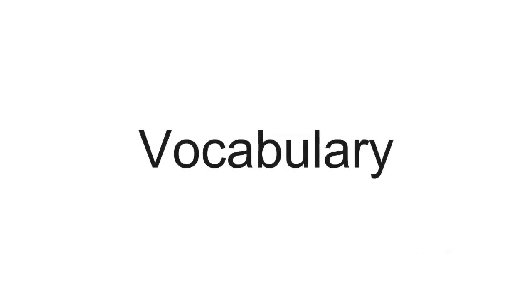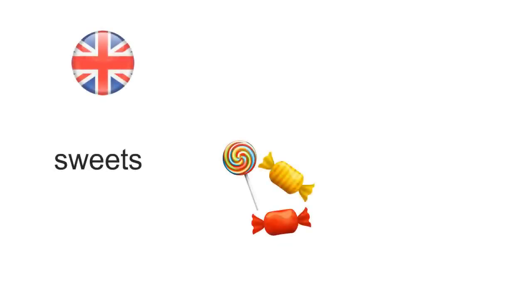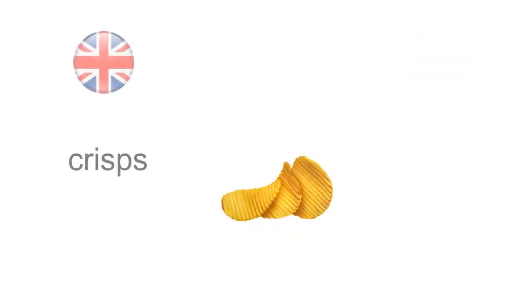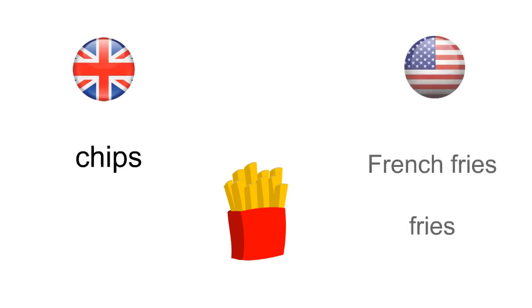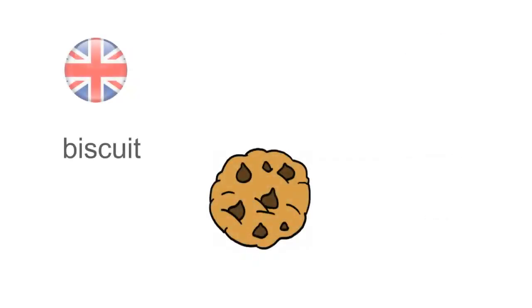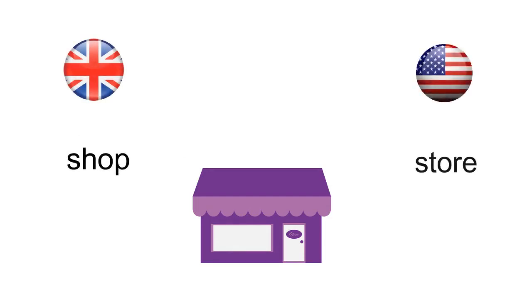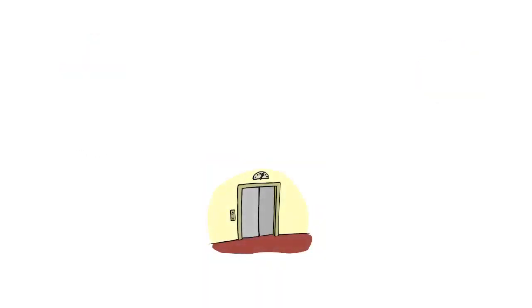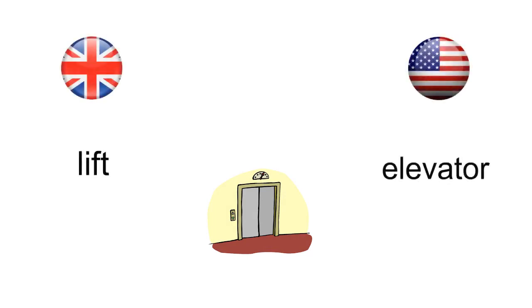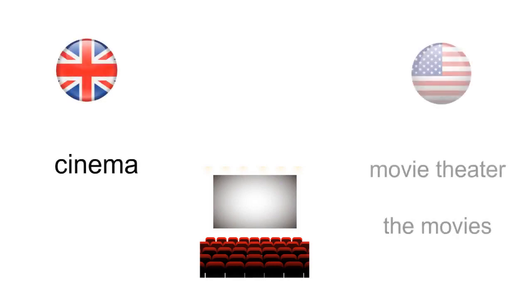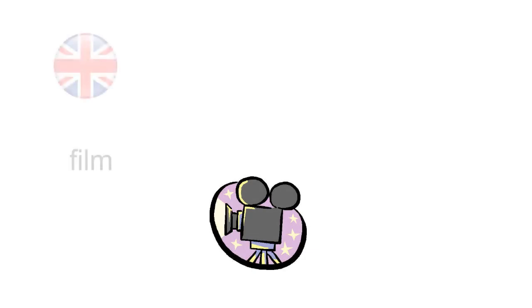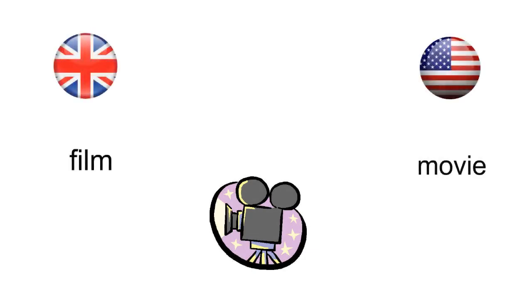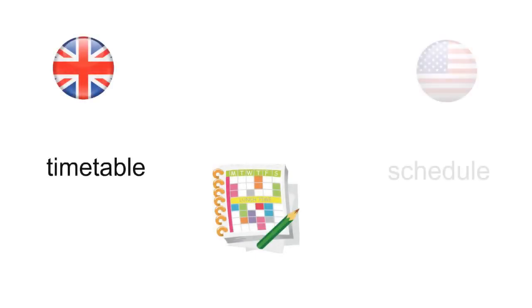Vocabulary. Sweets and candy. Crisps and chips. Chips and french fries or fries. Biscuit and cookie. Shop and store. Flat and apartment. Lift and elevator. Cinema and movie theater or the movies. Film and movie. Timetable and schedule.